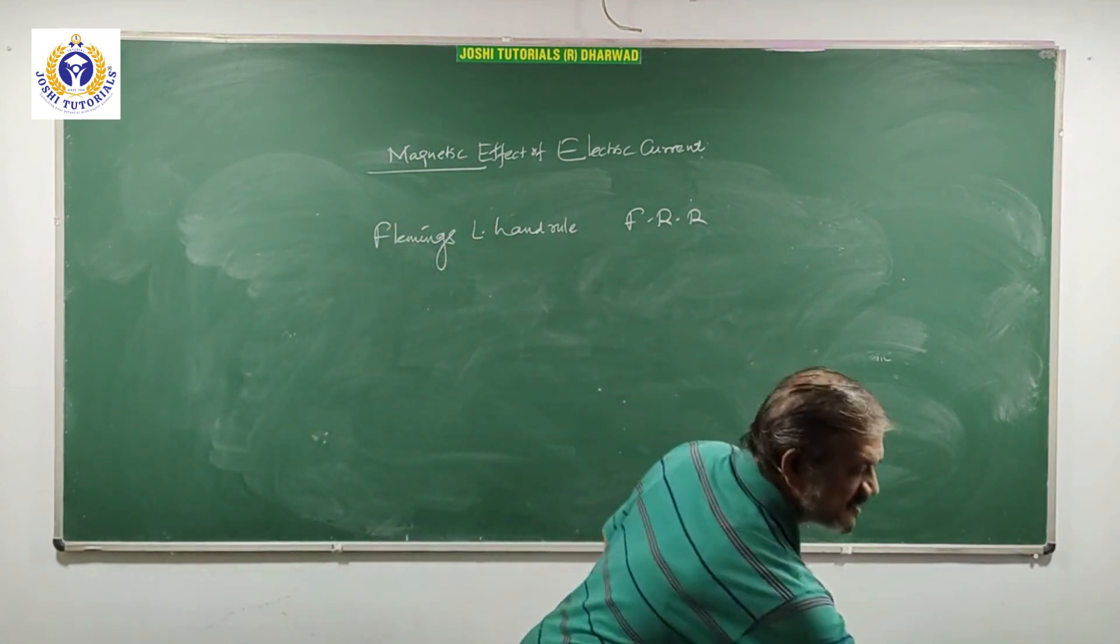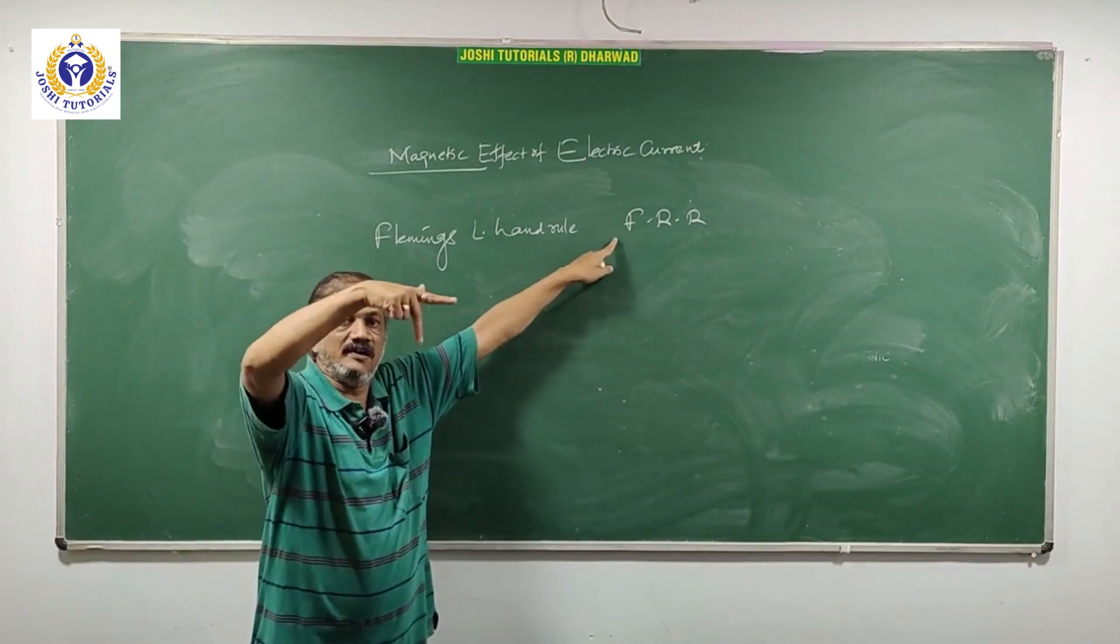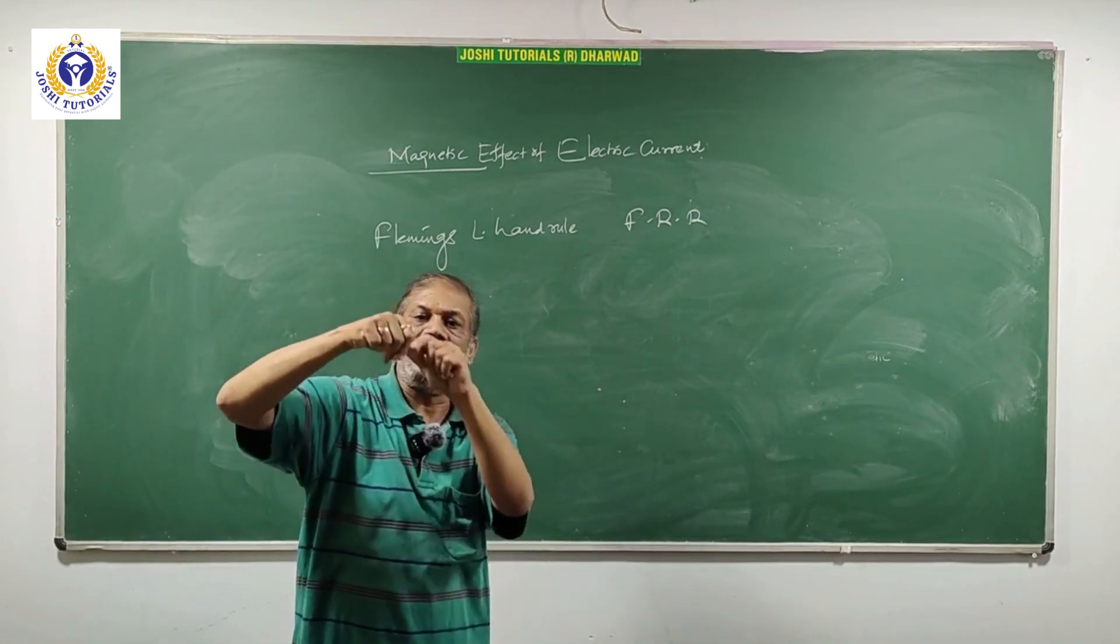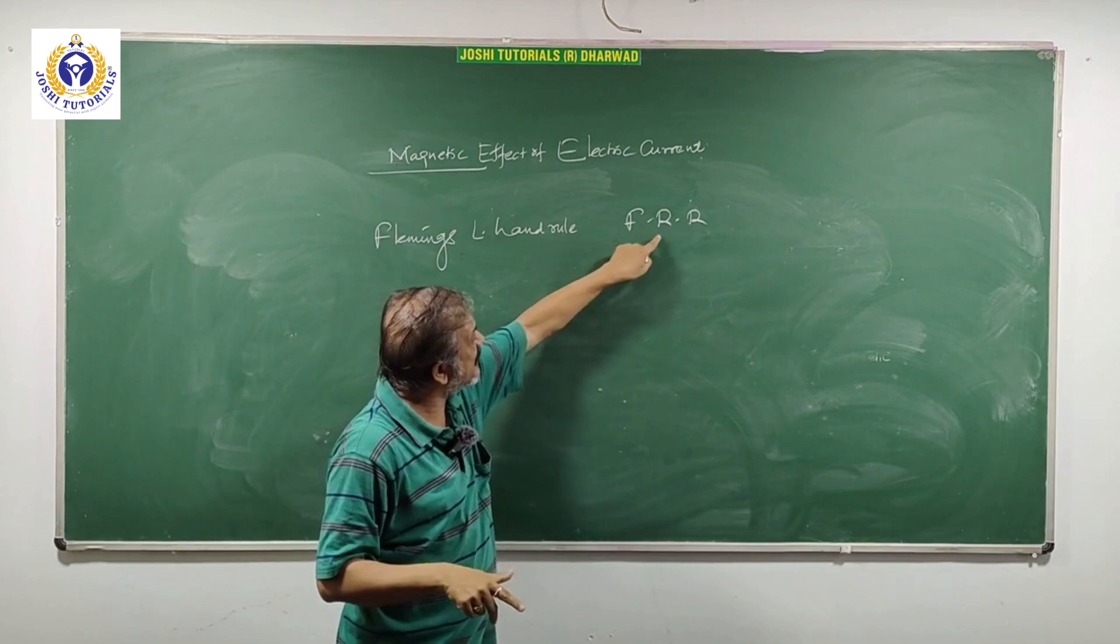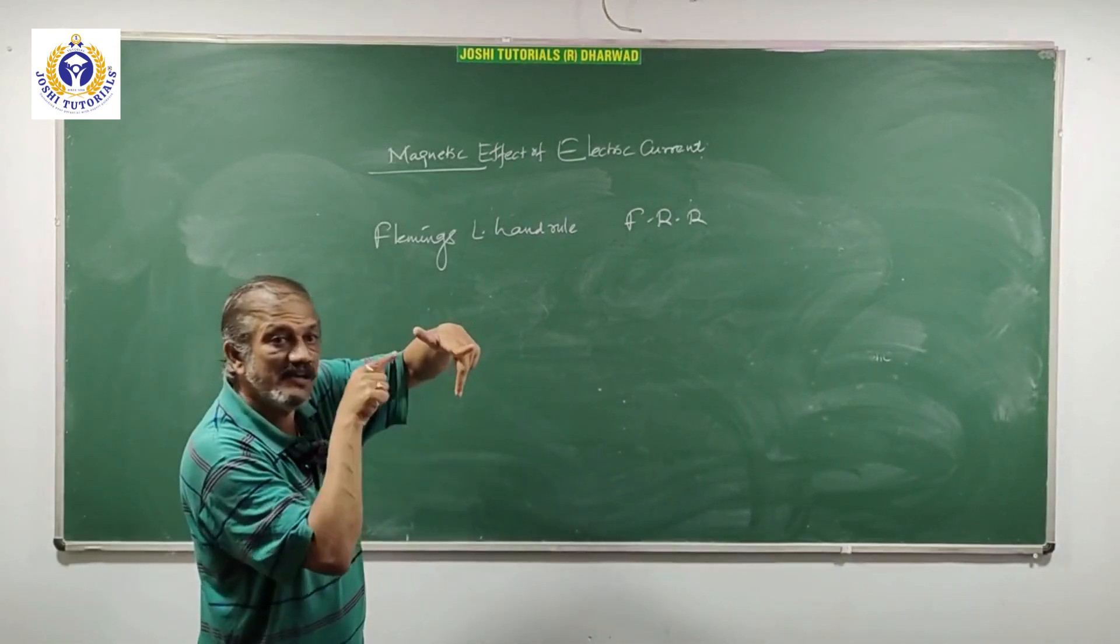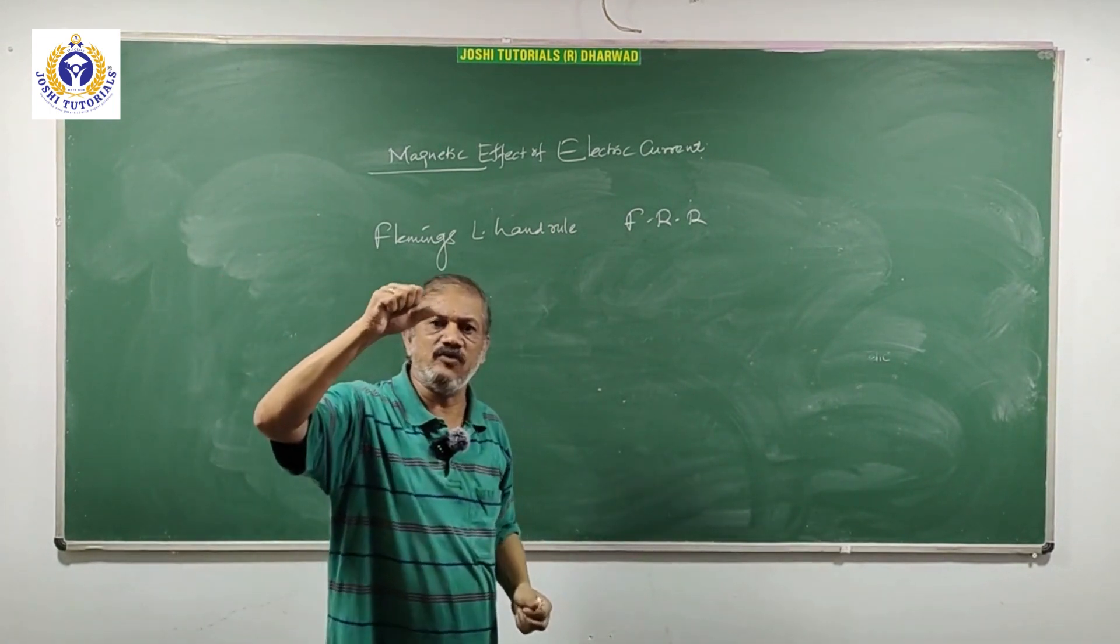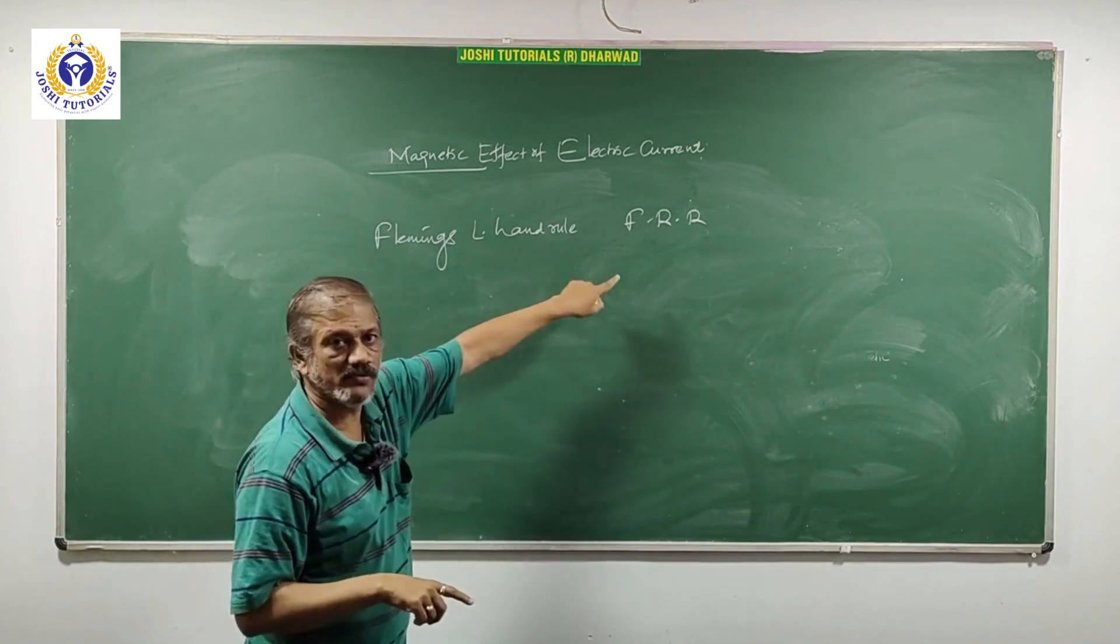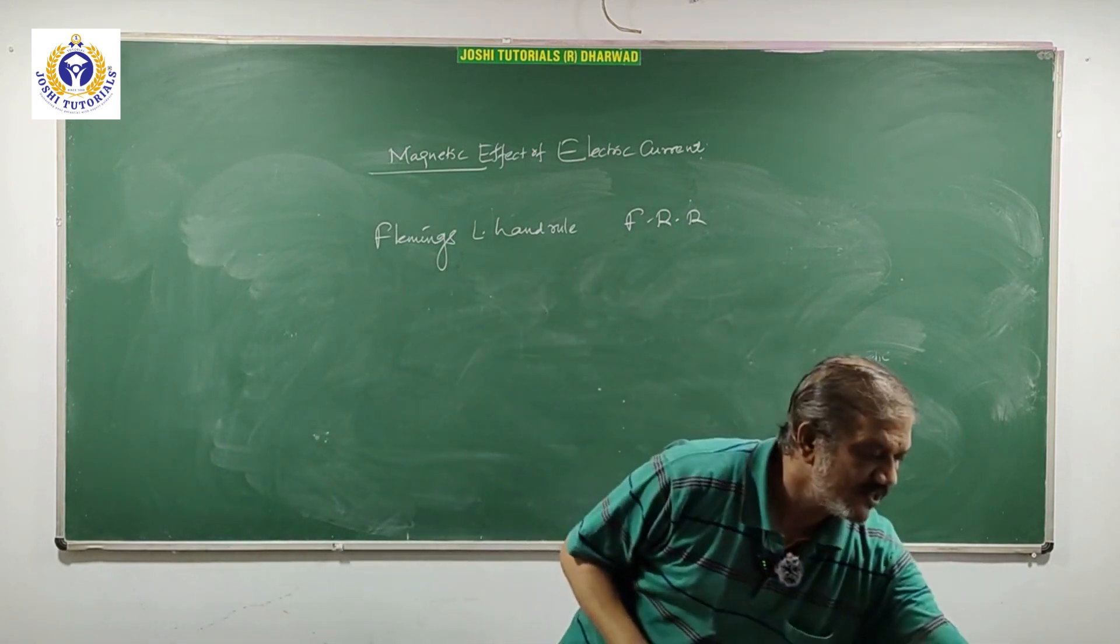Fleming's right hand rule is like this: forefinger, thumb and middle finger. Middle finger here is induced current. Current is not there initially. With the help of motion of conductor and mechanical force, we generate electricity. That's why induced current. Fleming's right hand rule, middle finger is induced current. Fleming's left hand rule, middle finger is electric current. It is force acting on the conductor, mechanical force. In generator rule it is dynamo rule, in motor rule, electrical to mechanical, mechanical to electrical.